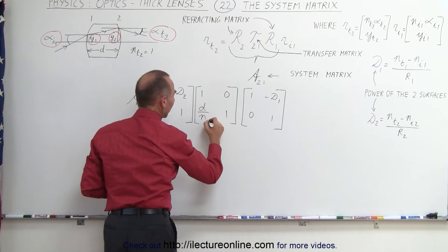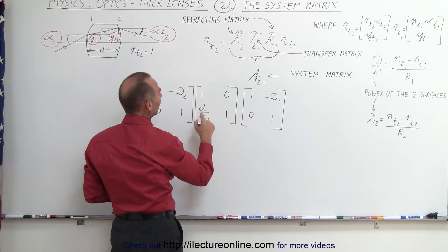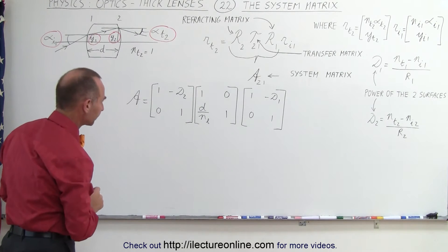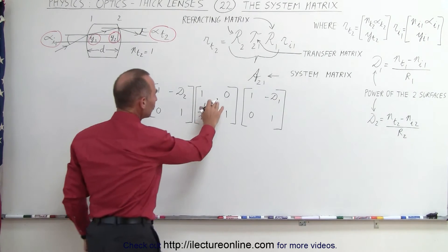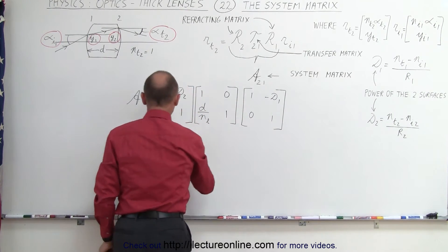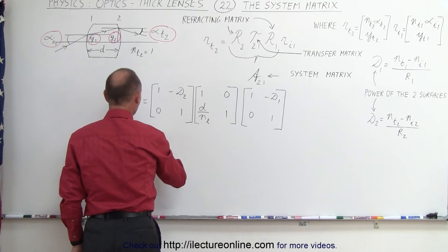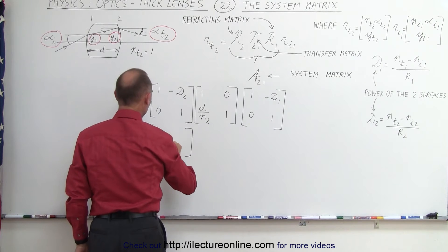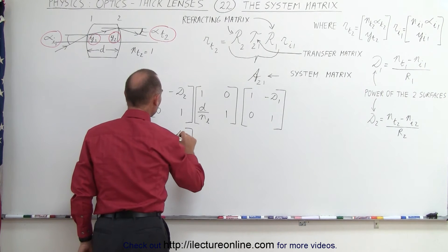Now, we can denote this by N sub L for the index of refraction of the lens, and D here would be the thickness of the lens. When we multiply these two matrices together, they will look as follows. So, we'll keep this one intact. So, this one here is 1, 0, 1, and minus D2.